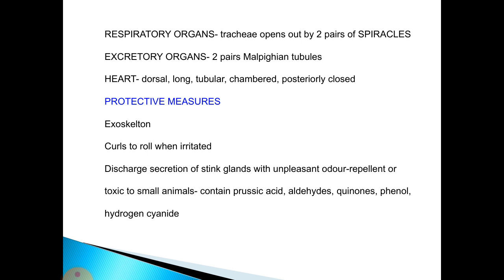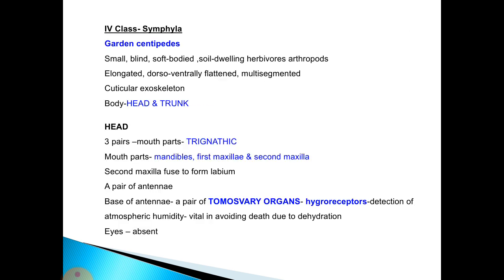Certain protective measures are adopted by the millipede: first is the hard protective exoskeleton; second, it curls to roll when irritated; and third, it discharges secretion from the sting glands with an unpleasant odor that acts as a repellent or is toxic to small animals. This secretion contains prussic acid, aldehyde, quinone, phenol, and hydrogen cyanide.